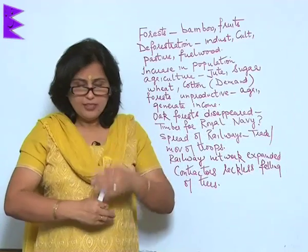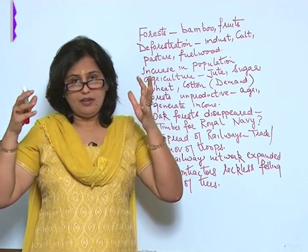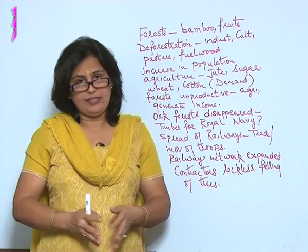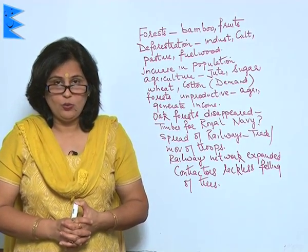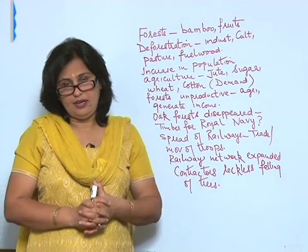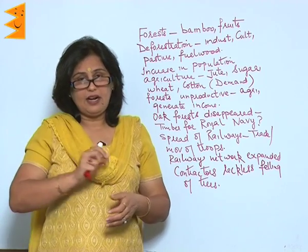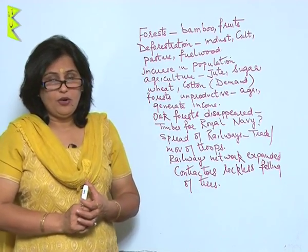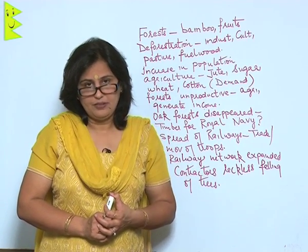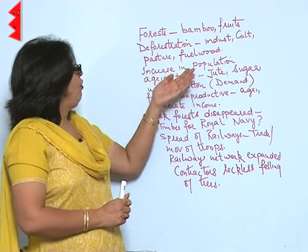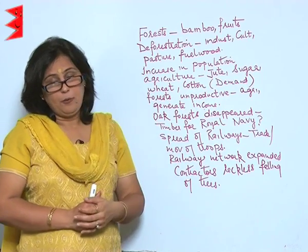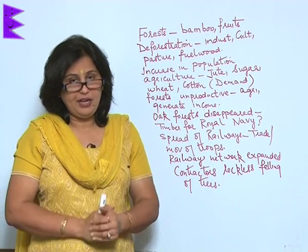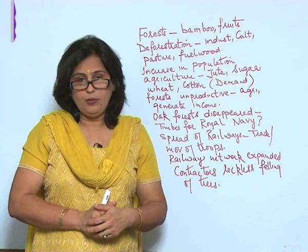But this process did not start all at once. It was a long process which actually led to deforestation in India. This started during the British Raj. What were those factors which led to deforestation in India during the colonial rule?